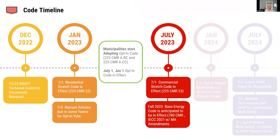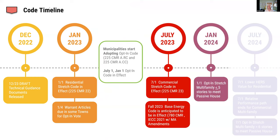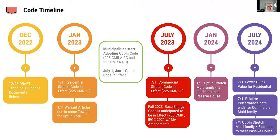This month, the commercial stretch code is officially in effect, and we're anticipating that the BBRS will update the base energy code, which applies only to those 51 towns and cities, sometime this fall. Starting next year, multifamily will have to meet more strict passive house level requirements. Six months later there's a lower HERS value for residential. The relative performance pathway is no longer valid for commercial multifamily, and for opt-in specialized code communities, passive house will be mandatory for multifamily.